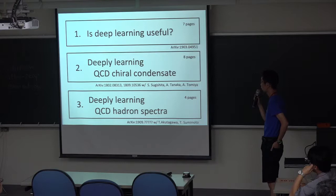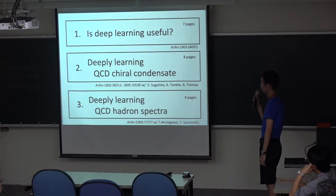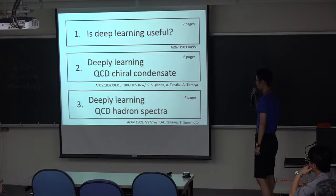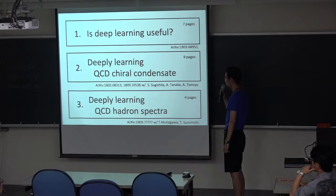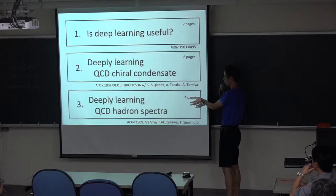I divided my topic into three parts. The first is a question to myself: is deep learning useful for any experience or not? My answer is kind of negative — it's interesting to see how they are related, but so far I don't know whether it's really useful. In sections two and three I'll explain the use of deep learning to get bulk geometry from QCD data — first QCD chiral condensate, and second, still unpublished, the QCD hadron spectrum — where we will see some kind of emergent structure.